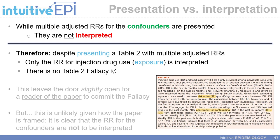In terms of presenting multiple measures of effect versus interpreting multiple measures of effect: while multiple adjusted risk ratios for the confounders are presented in my example Table 2, they are in fact not interpreted. Therefore, despite presenting a Table 2 with multiple adjusted risk ratios, only one is interpreted and there is no Table 2 fallacy in this paper, at least from the perspective of the author.